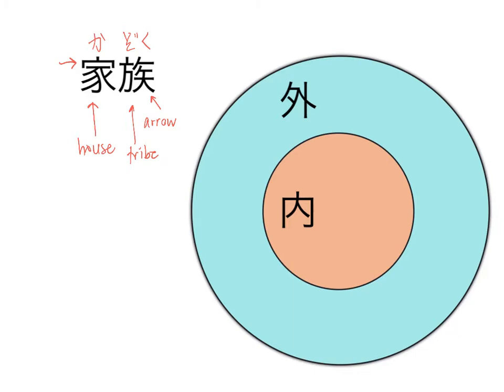And the graphic on the right here, the inner circle kanji is referred to as uchi. This kanji's reading is uchi, and it just simply means inside. So think of it as your inner circle.